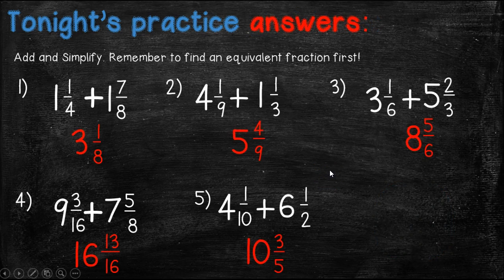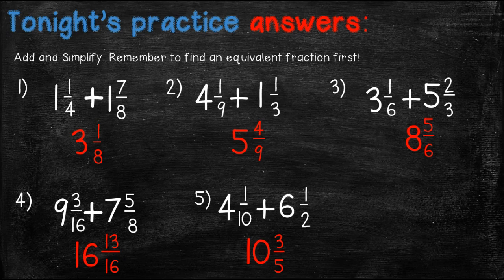Here are your answers for tonight's problems. Number one, the answer is 3 and 1/8. Number two, the answer is 5 and 4/9. Number three, the answer is 8 and 5/6. Number four, the answer is 16 and 13/16. And number five, the answer is 10 and 3/5.